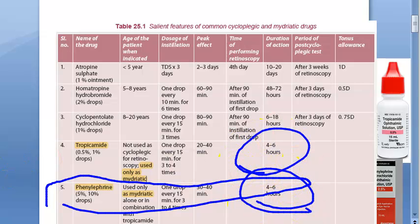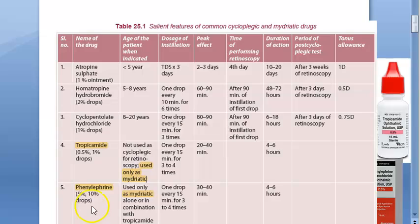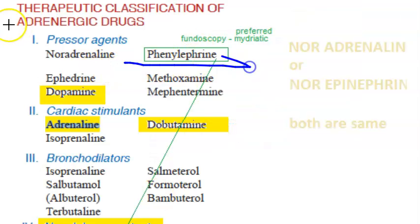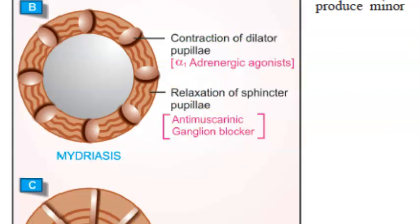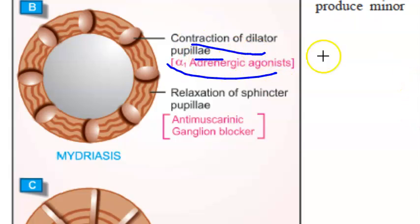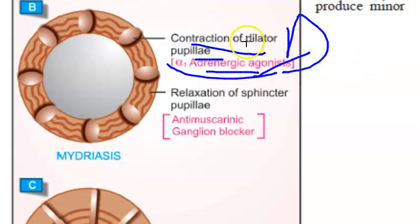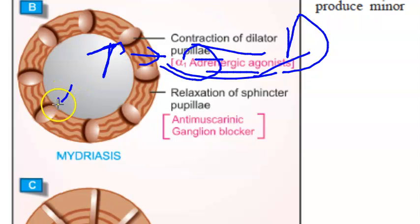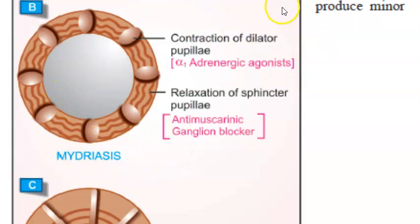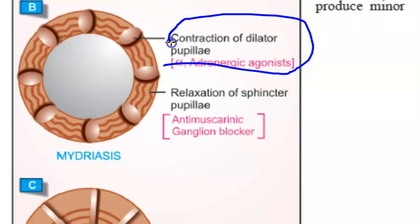Let's focus on phenylephrine and tropicamide. Phenylephrine has a duration of action of four to six hours, and tropicamide also has four to six hours of action. How does phenylephrine help in mydriasis? Phenylephrine is an adrenergic drug, so it causes contraction of the dilator pupillae. Through alpha-adrenergic action, the dilator pupillae contracts, the pupil dilates, and that is mydriasis. This is an active mydriasis.